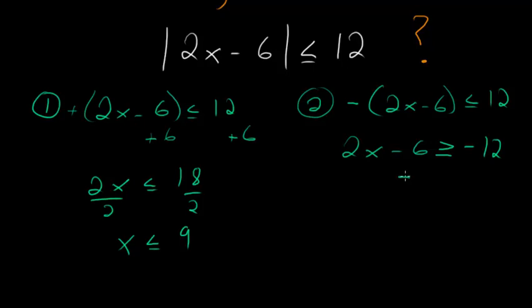Now I can just solve for x again by adding 6 to each side. So I have 2x greater than or equal to negative 6. Dividing by 2 on each side gives me x greater than or equal to negative 3.